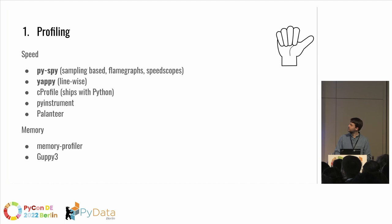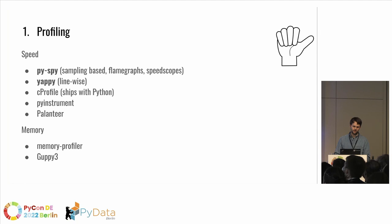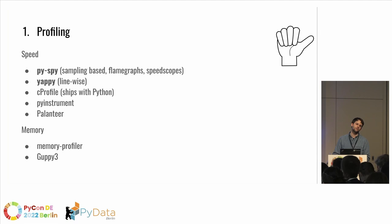A quick overview: py-spy is sampling-based with flame graphs and speedscope output. Yappi does line-wise profiling. cProfile is built into Python. py-instrument is quite popular, Palantir is rather young but also popular. For memory profiling I usually use memory-profiler or guppy3. For speed, except for py-spy, all of these directly instrument your code, so they all suffer from the same downsides as yappi.